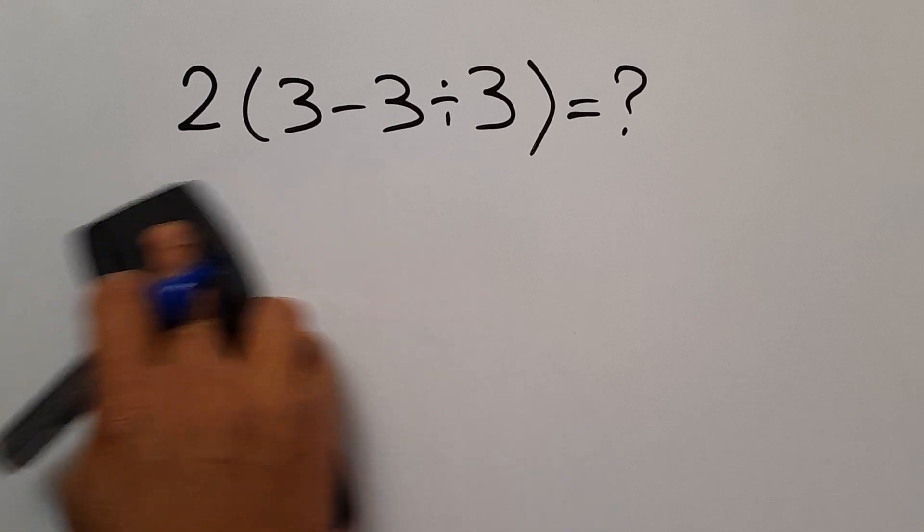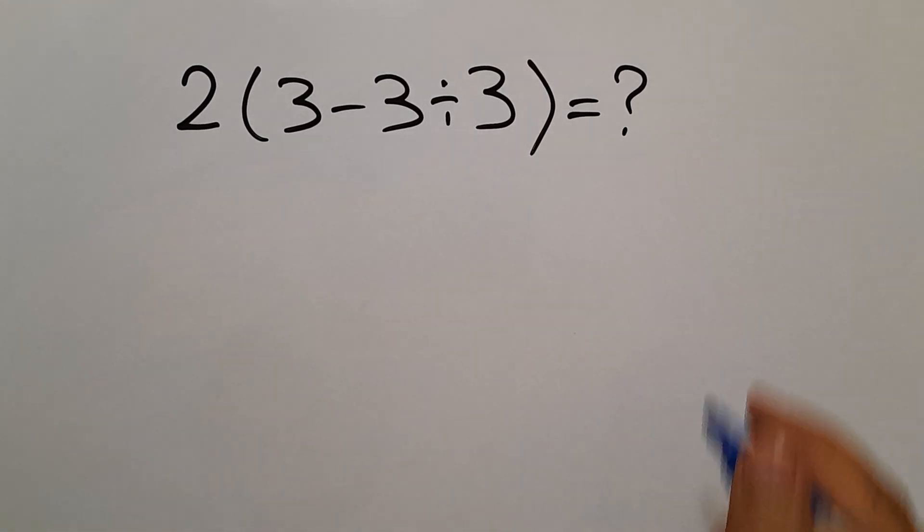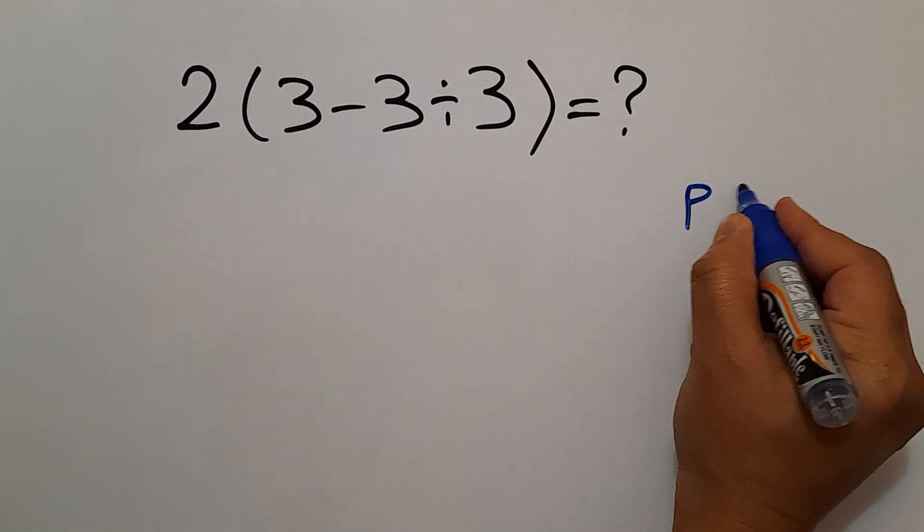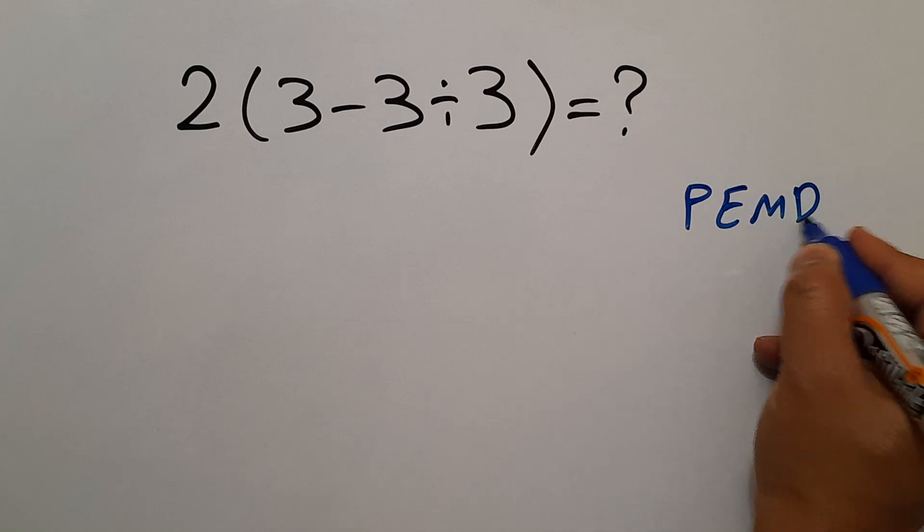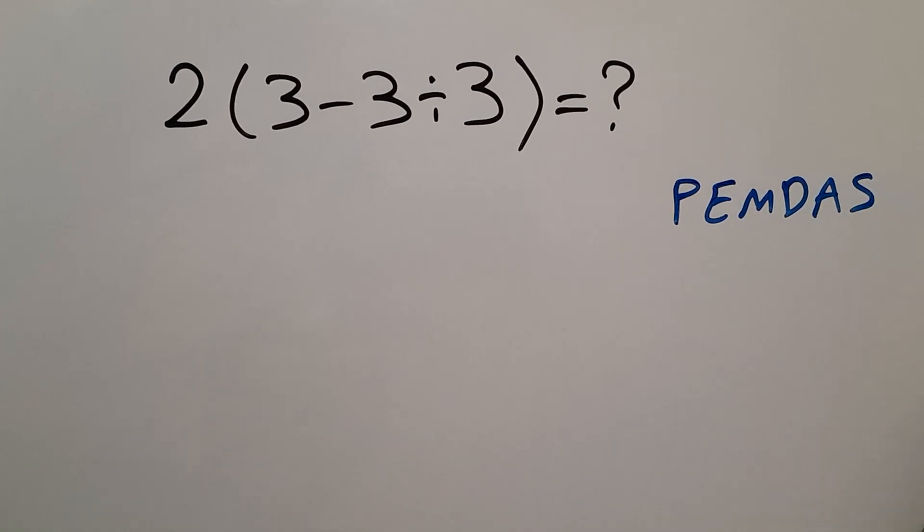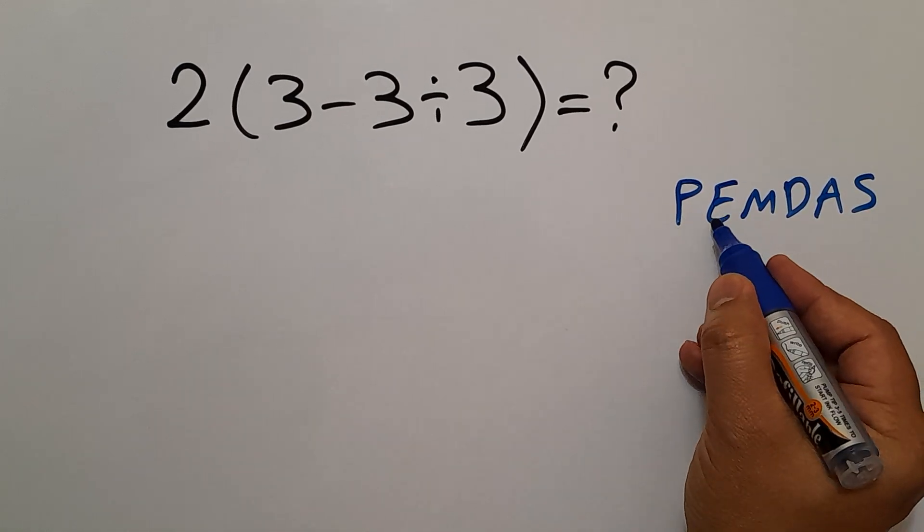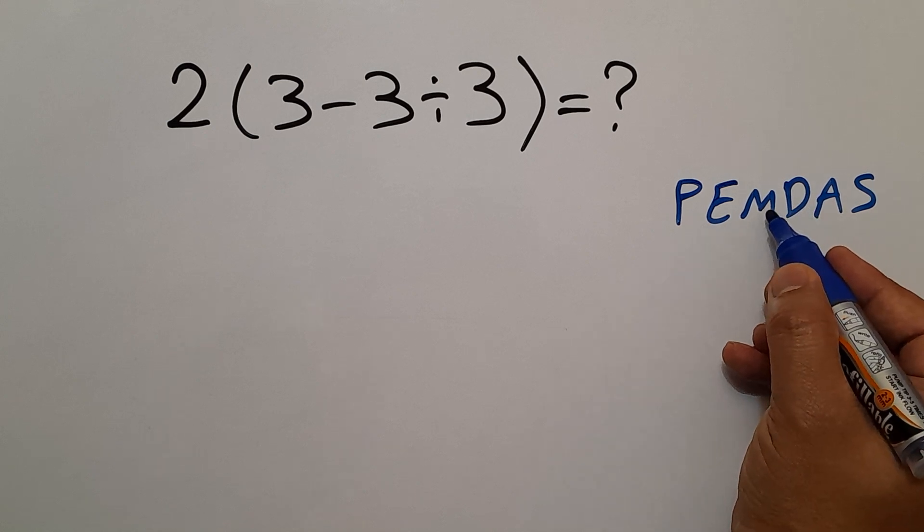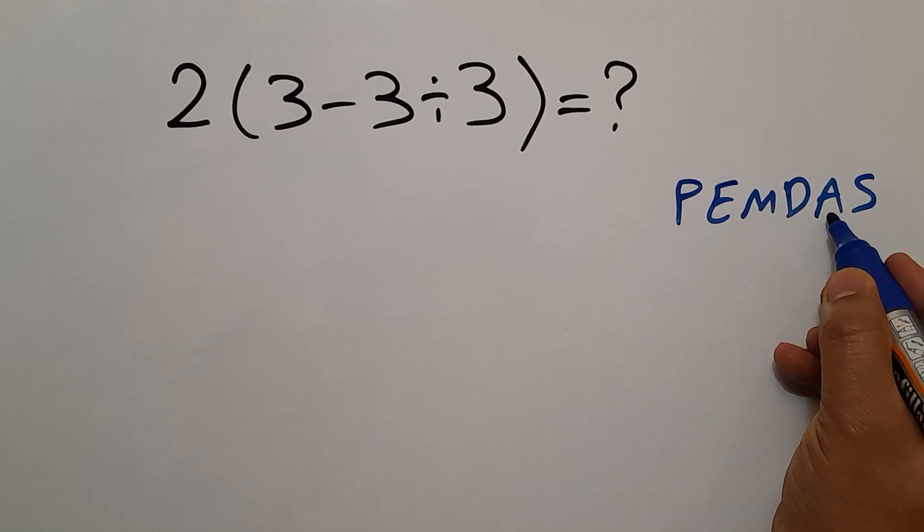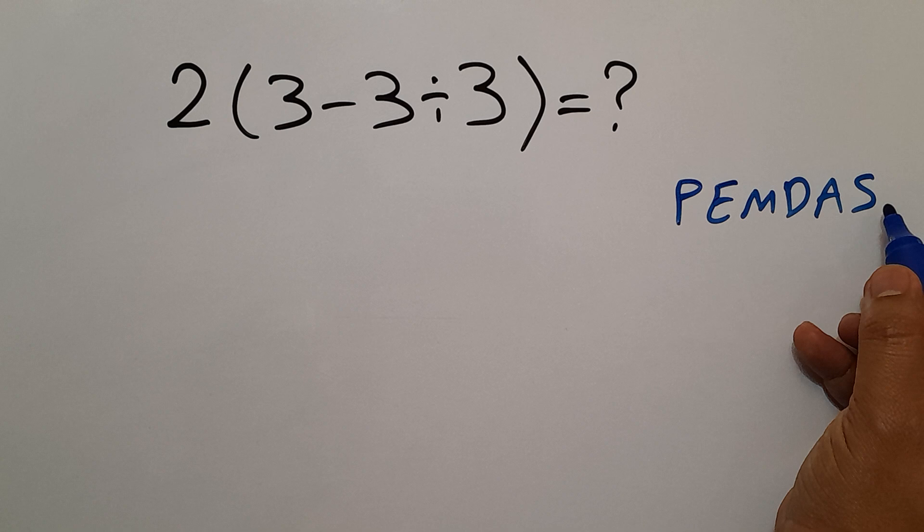Because according to the order of operations, which is PEMDAS, P stands for parentheses, E stands for exponents, M and D stands for multiplication and division, and A and S stands for addition and subtraction.